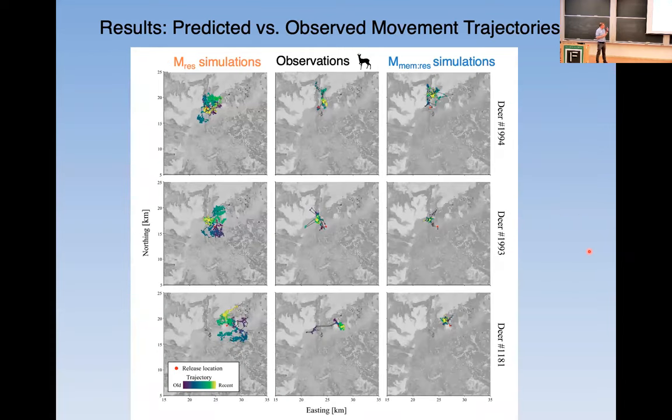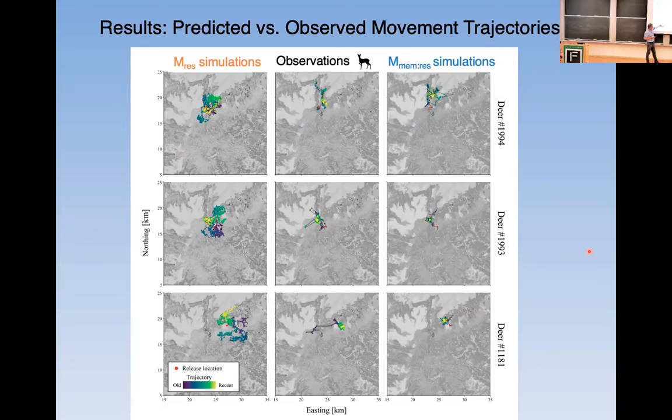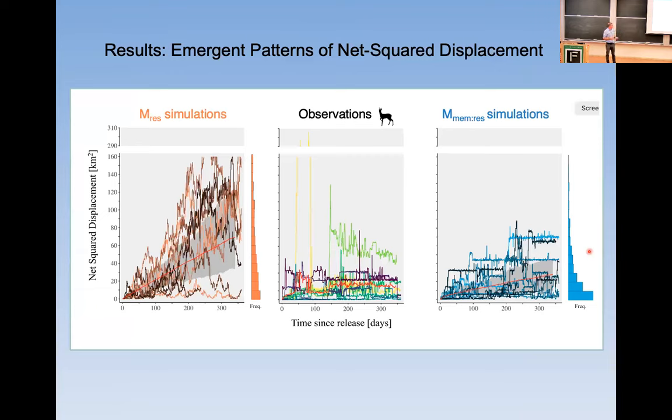So in these situations, we can make predictions about the patterns of movement and what they look like. And here are the observations in the middle, and this is just example simulations for a series of the deer. And what it's showing, in essence, is the patterns of movement, if you simulate the movement process, look a lot more like the observations than the simpler models that don't incorporate memory. And what that then can do is look at emergent patterns of net squared displacement as another metric of the ability of those models to more realistically capture the observed patterns of movement.